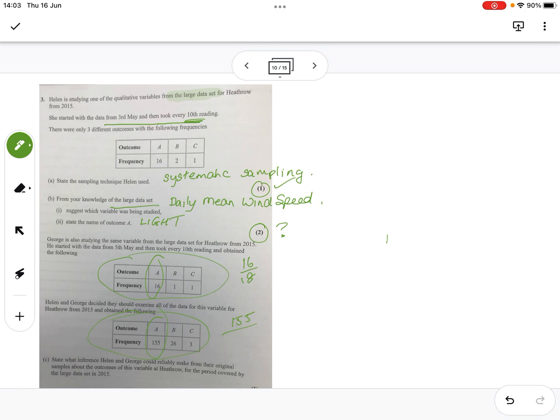The probability of A here is 155—well, not probability, this is the actual value. You've got 155 out of 155 plus 26 plus 3, so you end up with 184.